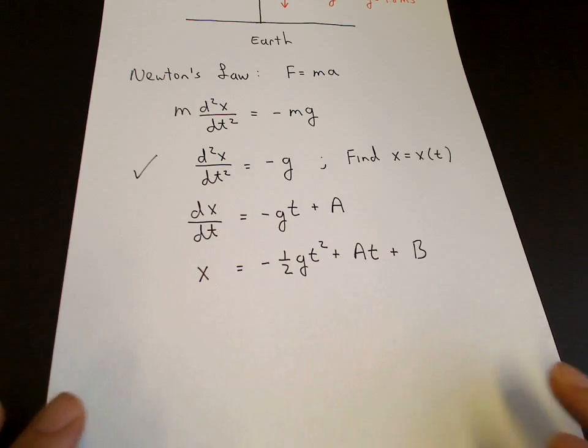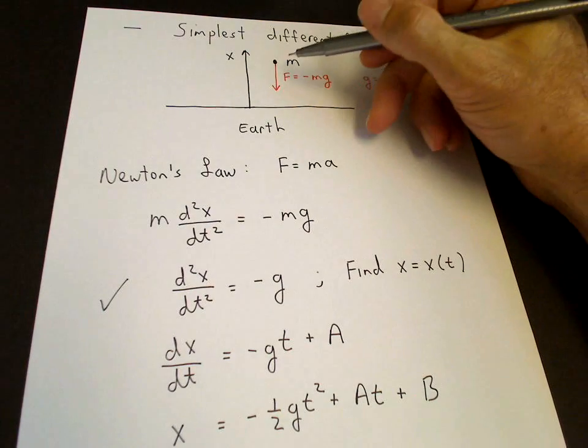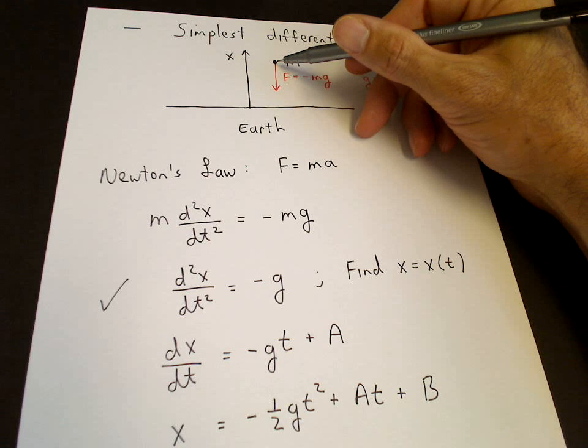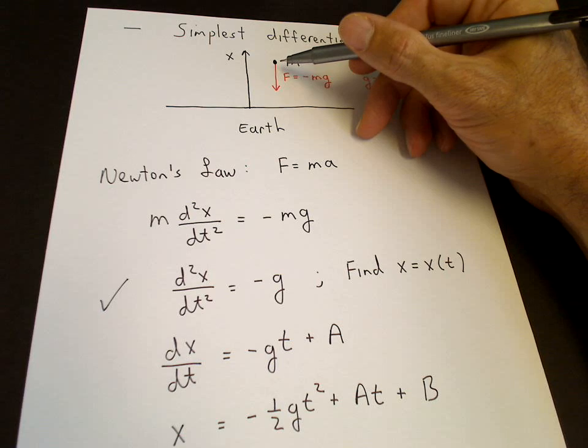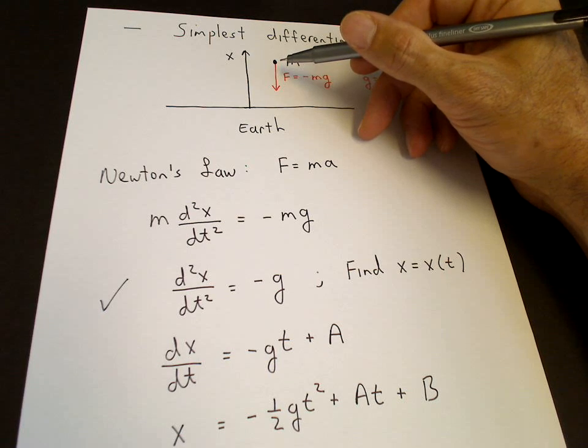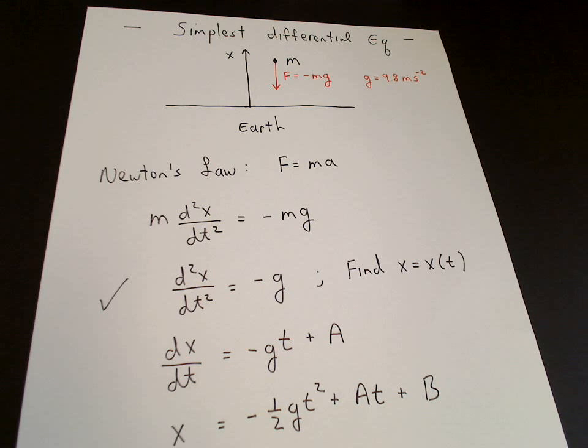Those are called initial conditions. If we have a mass here that's falling under gravity, in order to know the position of this mass at a time t, we needed to know what was the initial height above the ground, x of 0, and the person that was dropping the mass - did they throw it up? Did they throw it down? Or did they just release it? That corresponds to the initial velocity.